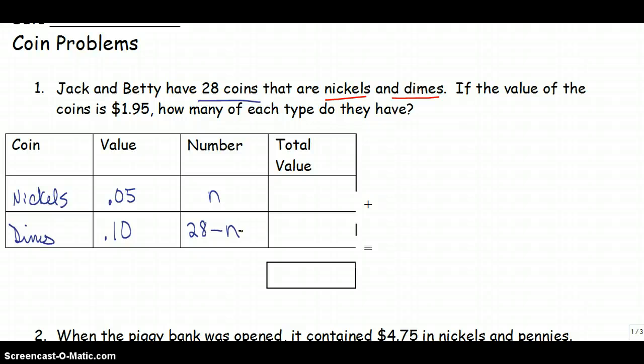Now we need to figure out the value. If I've got two nickels, I know that's worth 10 cents, right? And I find that by multiplying. I'm going to do the same thing here, except here I don't know how many nickels I have. I just have n. So .05 times n is .05n.